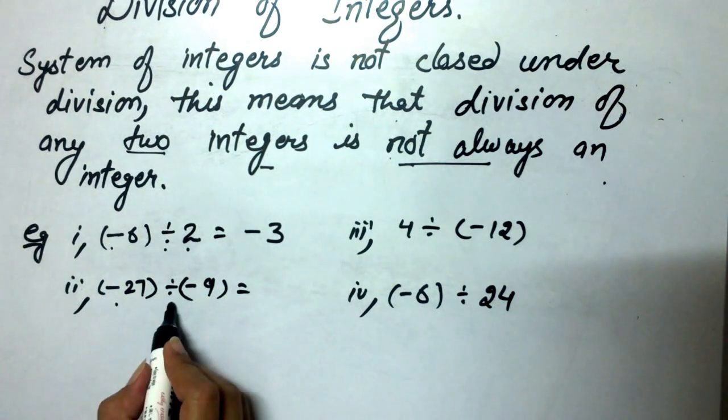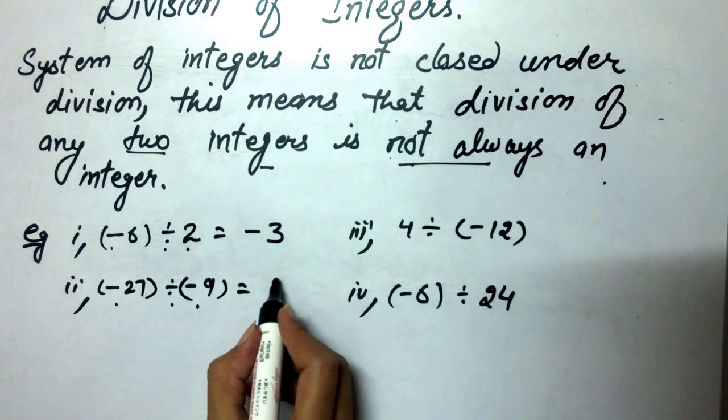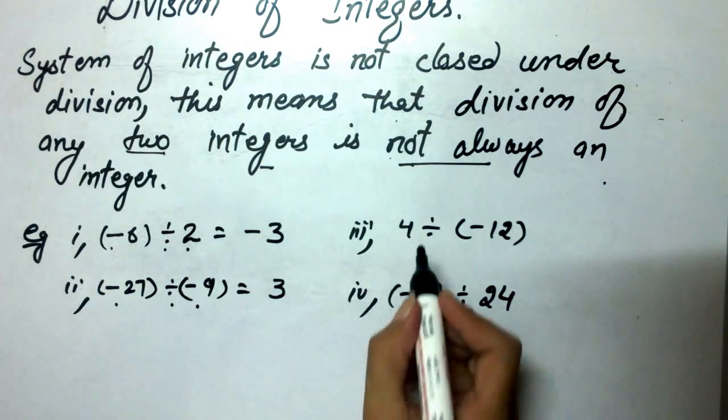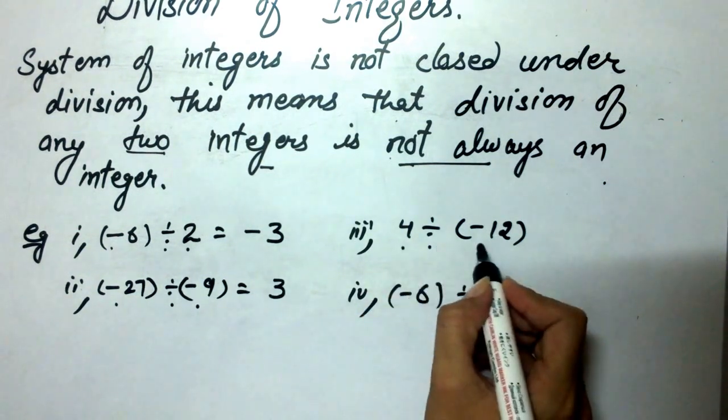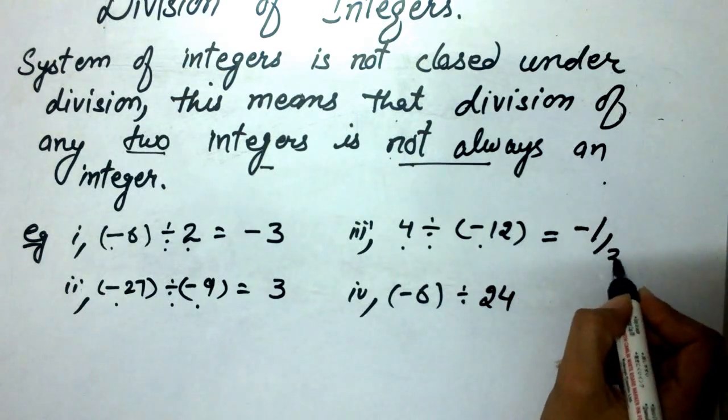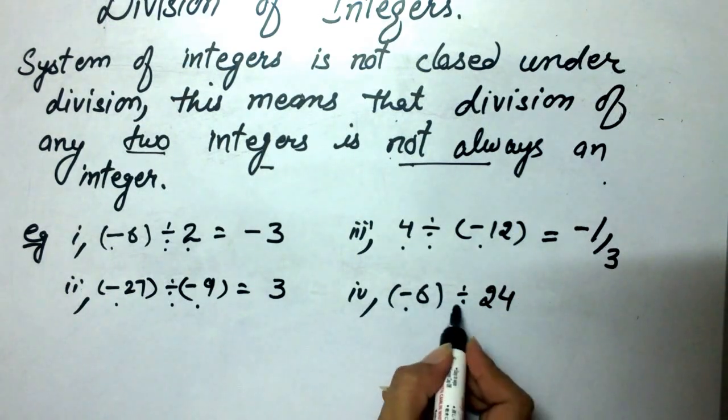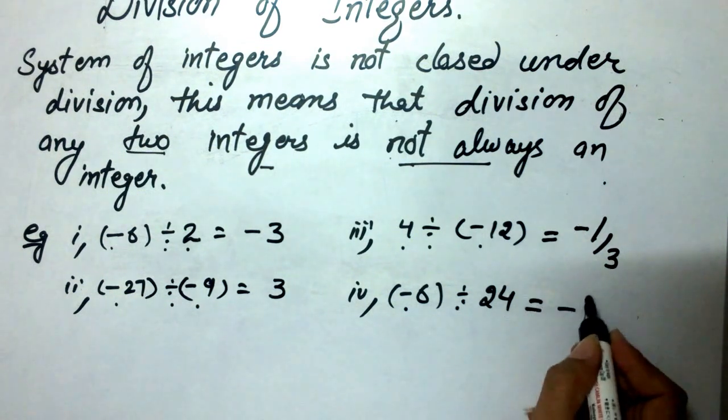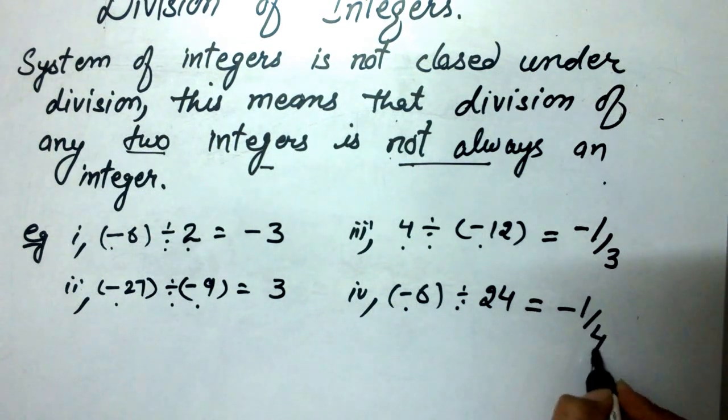Minus 27 divided by minus 9 is equal to 3. 4 divided by minus 12 is equal to minus 1 upon 3. Minus 6 divided by 24 is equal to minus 1 upon 4.